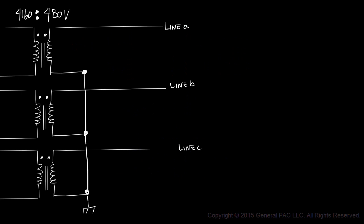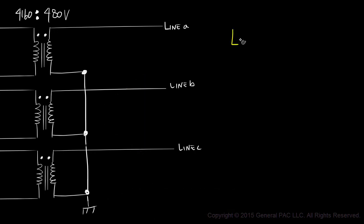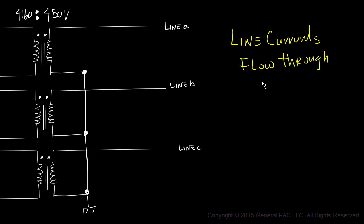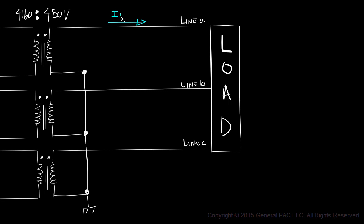Let's pick up where we left off. On the secondary side of the transformer, our transformer is connected in Y with the neutral grounded. We understand that line current — or line-to-line current as I like to call it — is a current that flows through the lines or conductors. Since we've assumed that the secondary side is our load side, the line currents will flow through our lines to our load. So line-to-line current A will flow through line A, line-to-line current B will flow through line B, and line-to-line current C will flow through line C, and they will all feed our load.